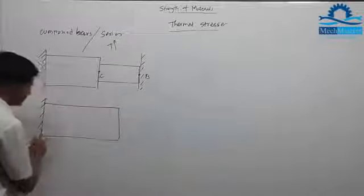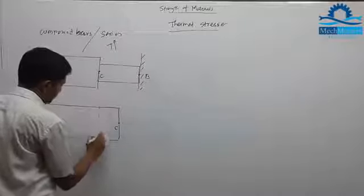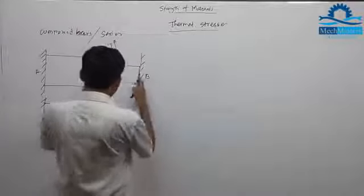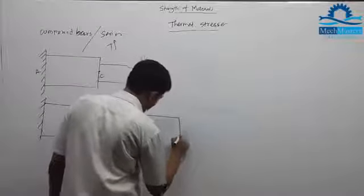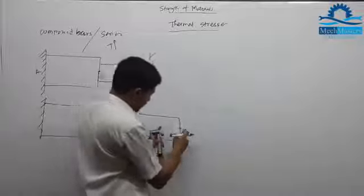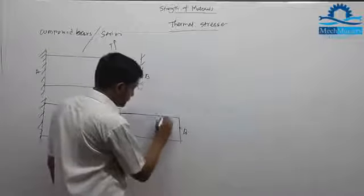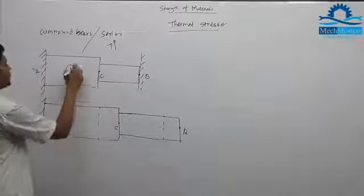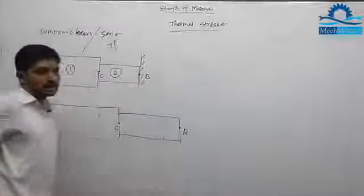When the temperature is increased by T degrees centigrade, the C point will move outward. The original length AC is L1 and CB is L2. After thermal expansion, the B point will shift to a new position. We denote AC bar as bar 1 and CB bar as bar 2.